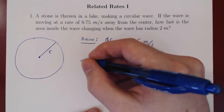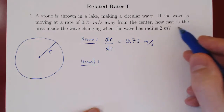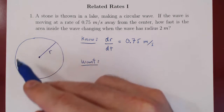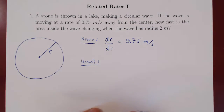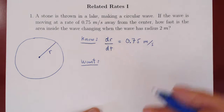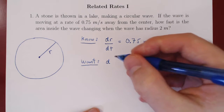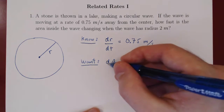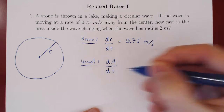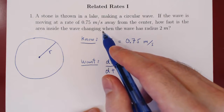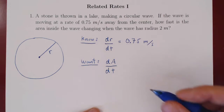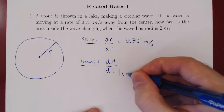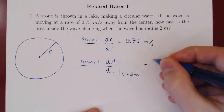Now here's the question — this is what we want to find. How fast is the area inside the wave changing? As the circle formed by the wave gets bigger and bigger, the area also grows. Rate of change is a derivative. Let's call the area uppercase A; it is also a function of time. We want dA/dt — specifically when the wave has a radius of 2 meters, so we want the rate of change of the area exactly when the radius reaches 2 meters.